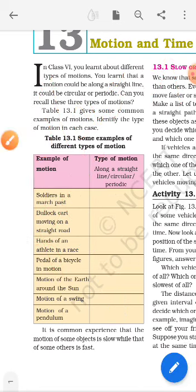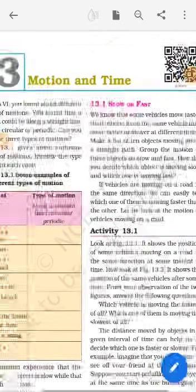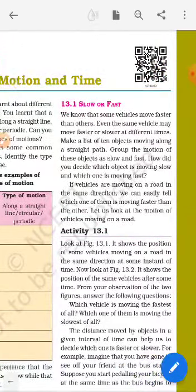So how you can tell whether a motion is slow or fast for any object? Motion is anything in which an object changes its position from one place to another with respect to time or changing with time.